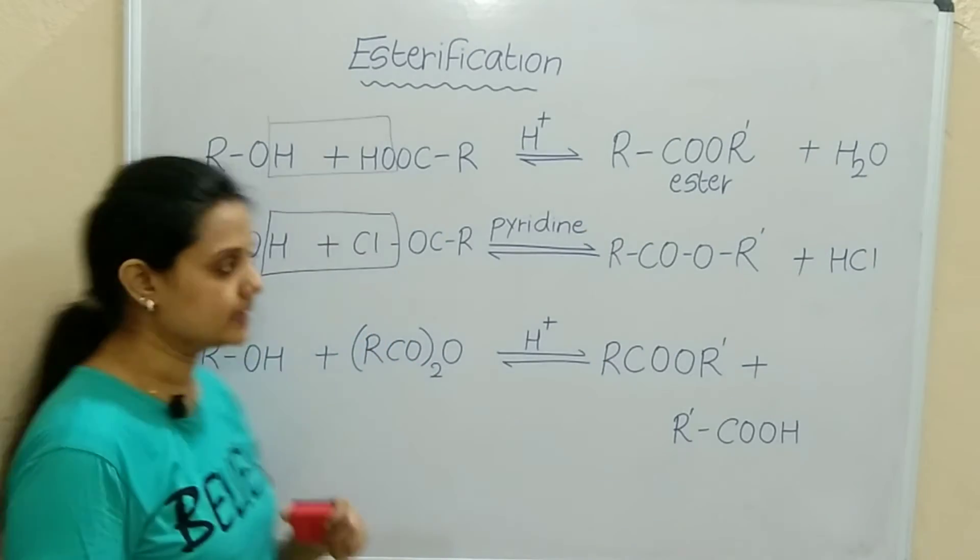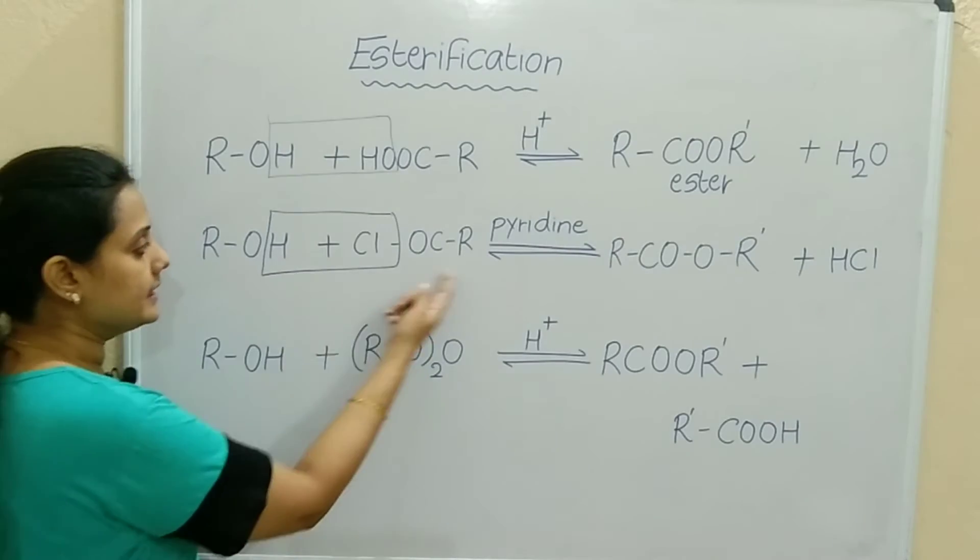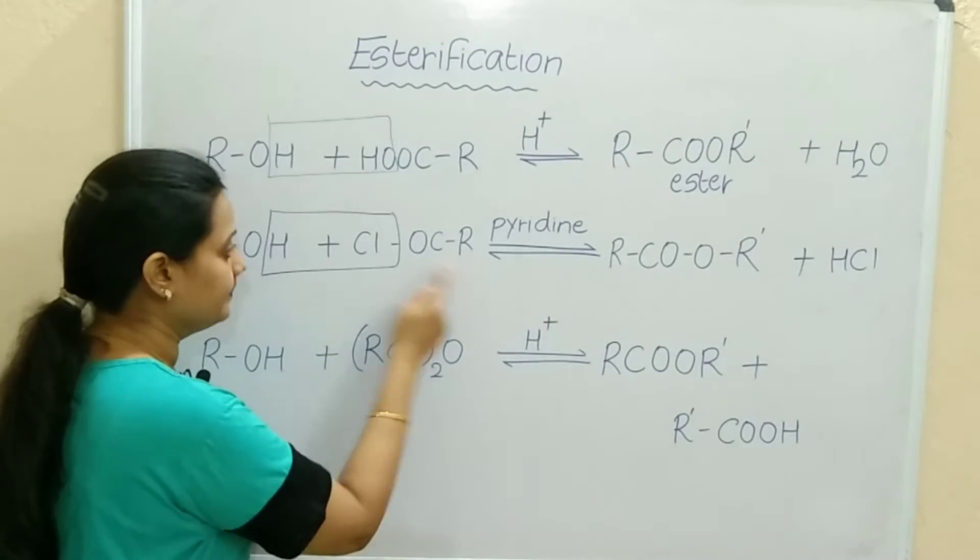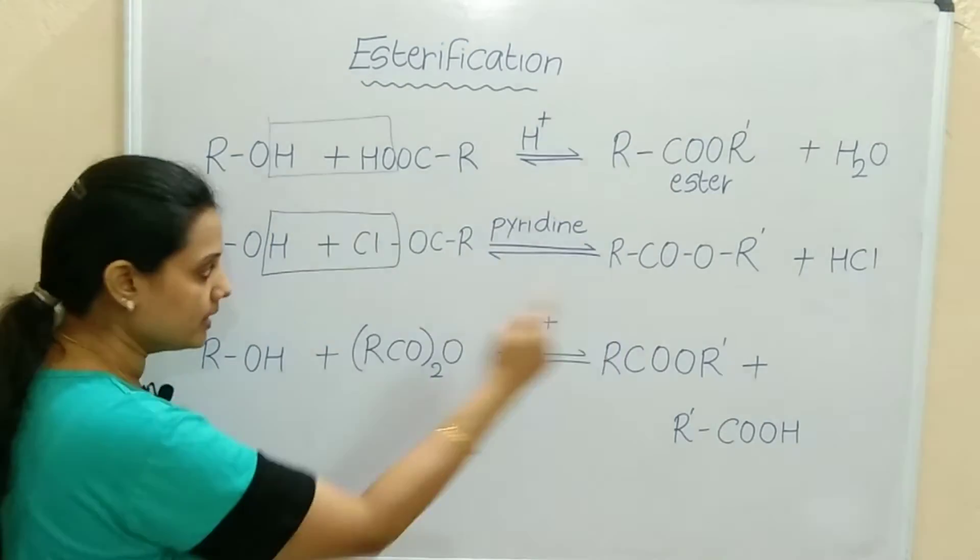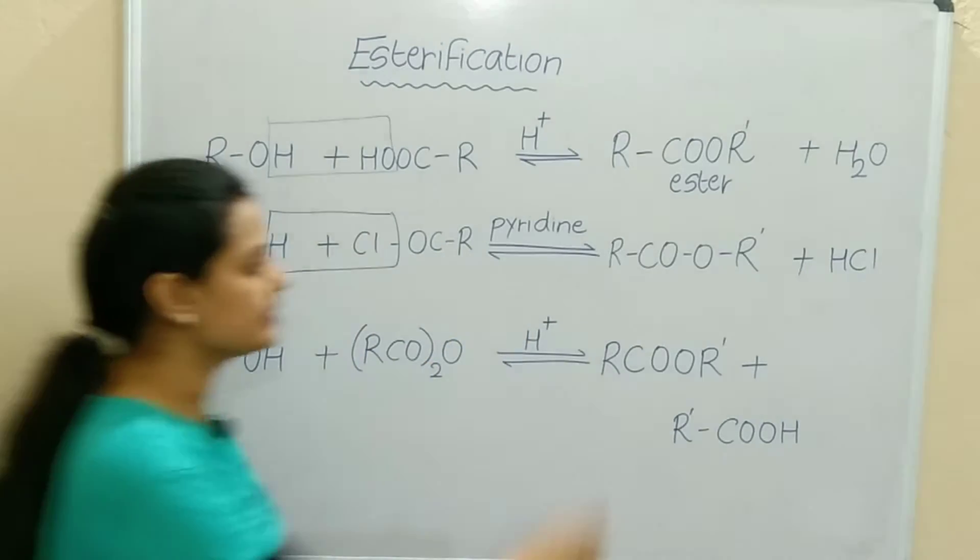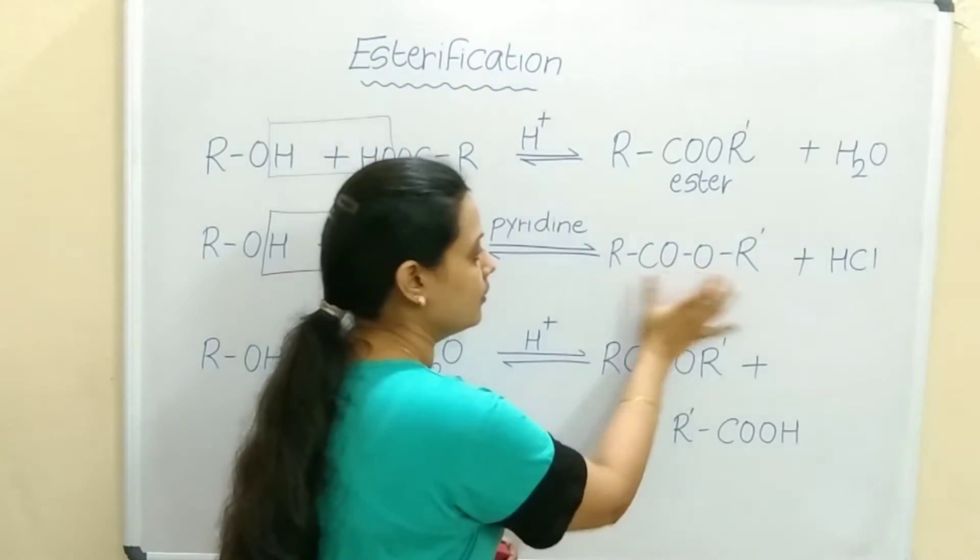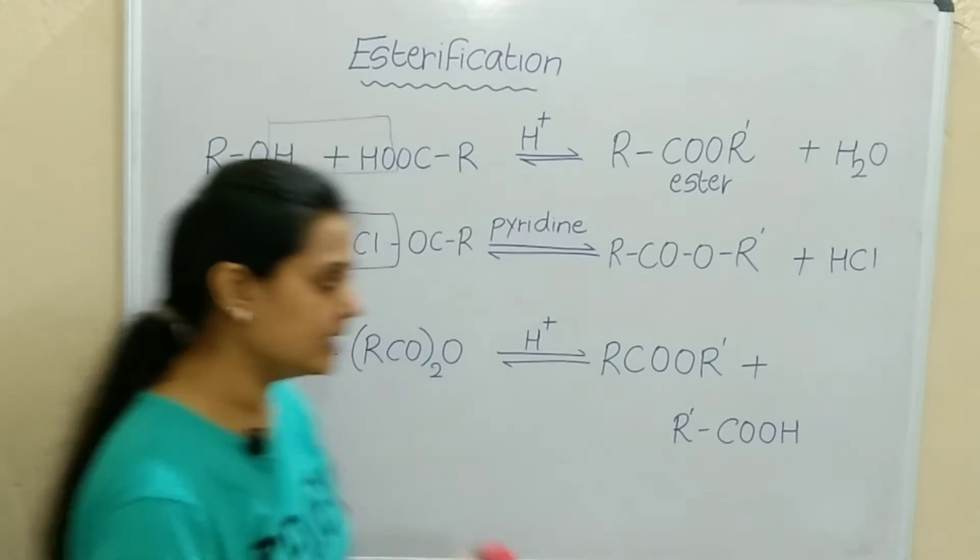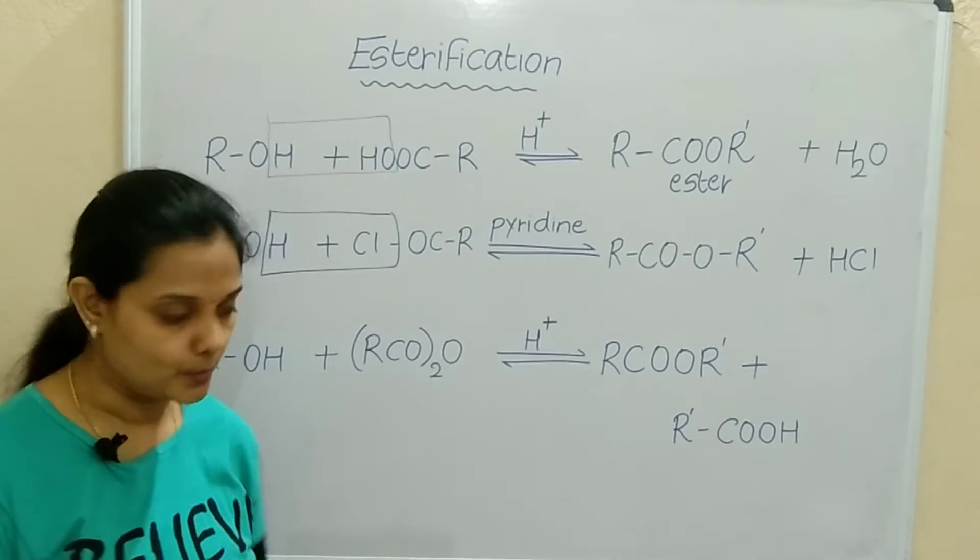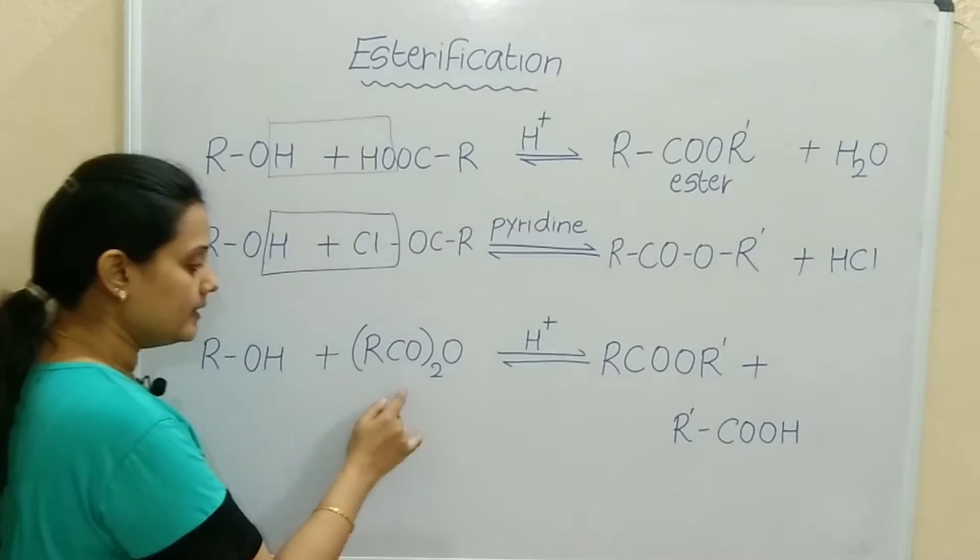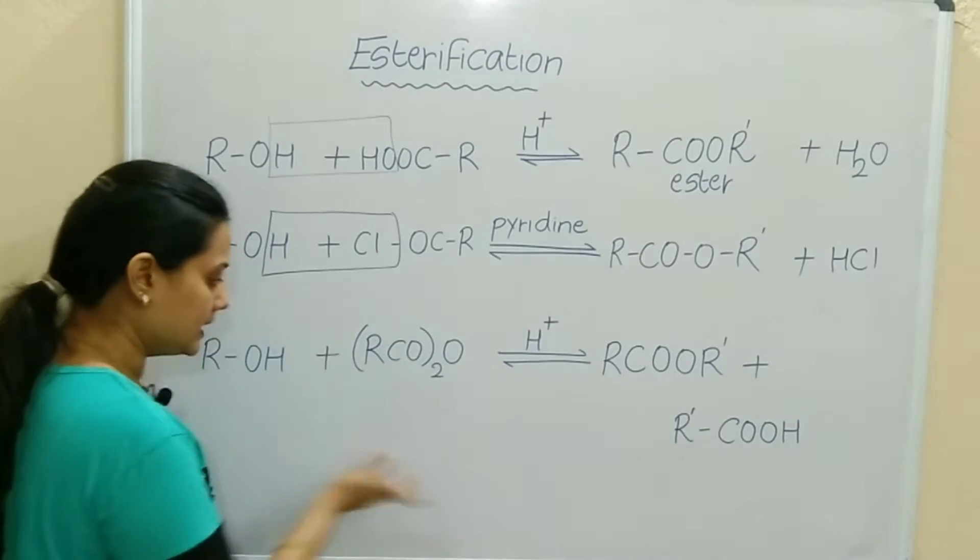Alcohol when treated with acyl chloride removes HCl and ester is the main product. These R groups can be same or both can be different. You can give any example of alkyl group. Alcohol when treated with acetic anhydride.